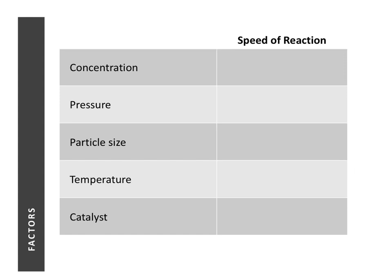When the concentration of reactants increases, the speed of reaction will also increase. This is the reason why we get the shape of the graph seen in the previous lesson, where the gradient is steepest at the beginning, decreases in the middle, and reaches zero at the end. At the start of the reaction there is the most amount of reactants present, so the concentration is highest. As the reaction proceeds, more reactants are used up, so concentration decreases.